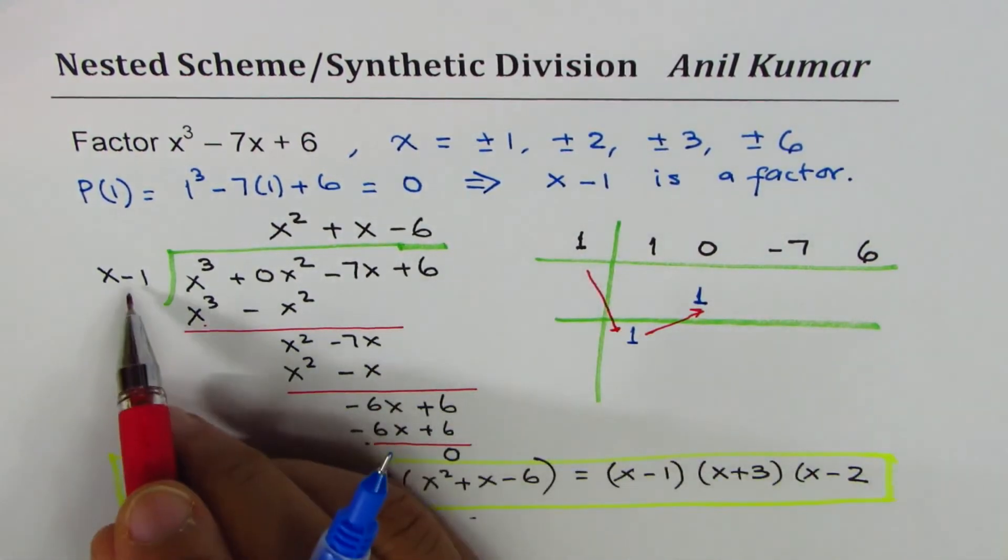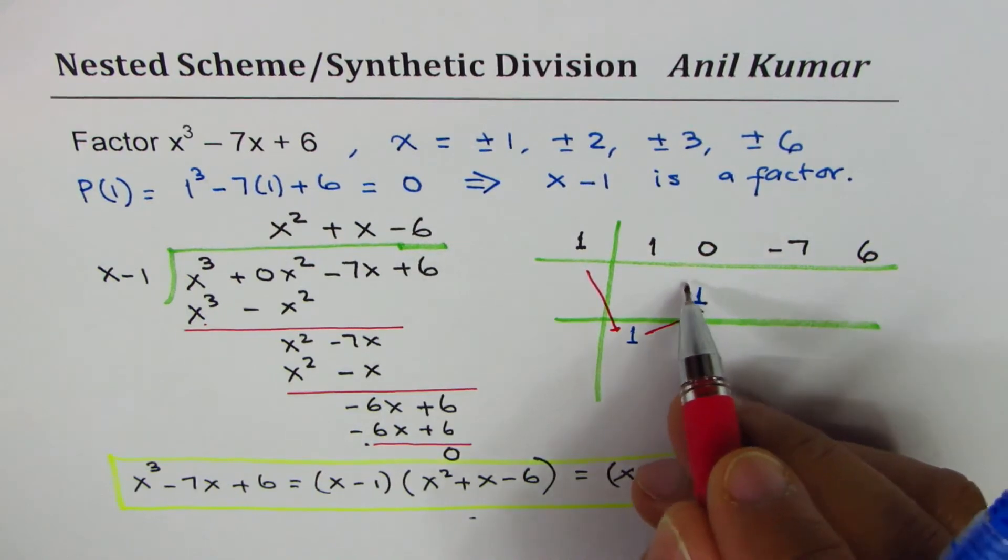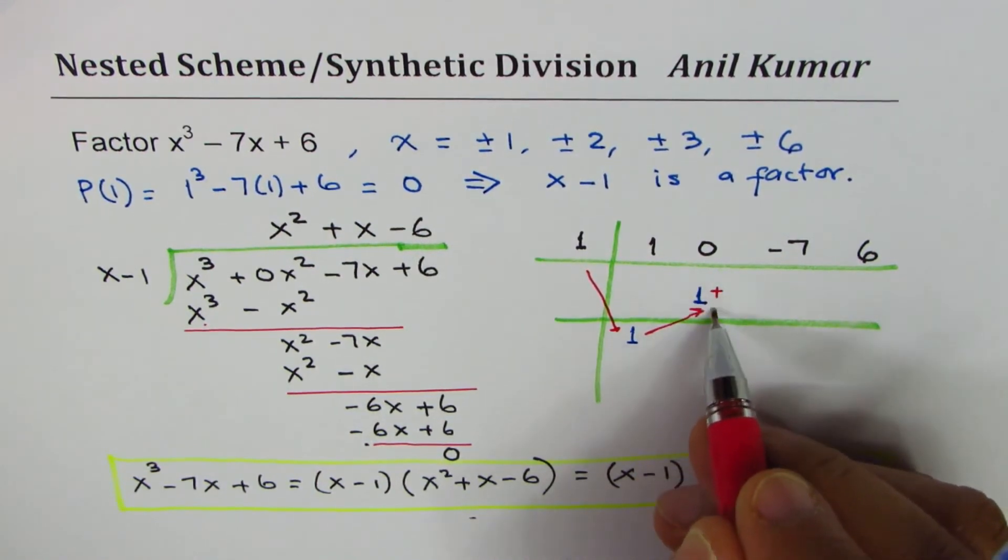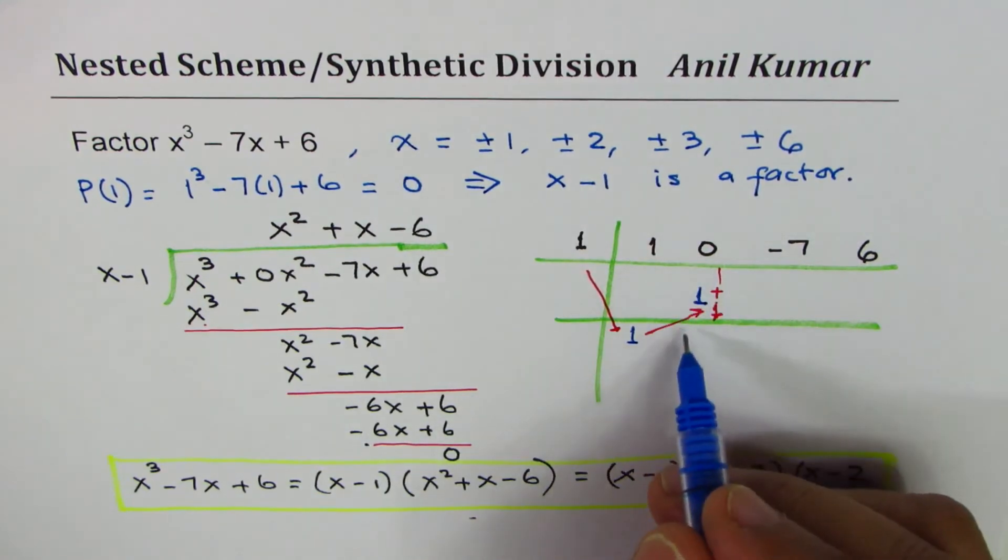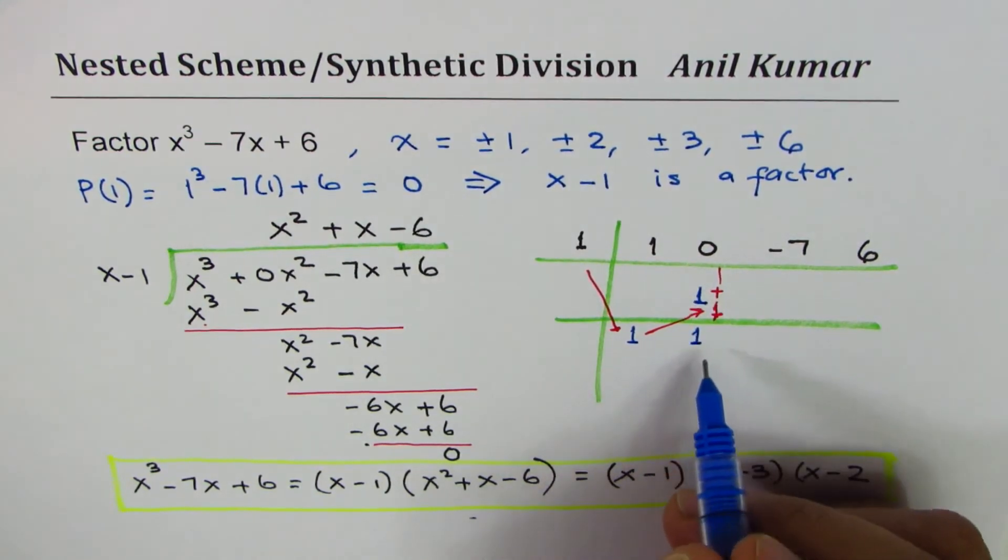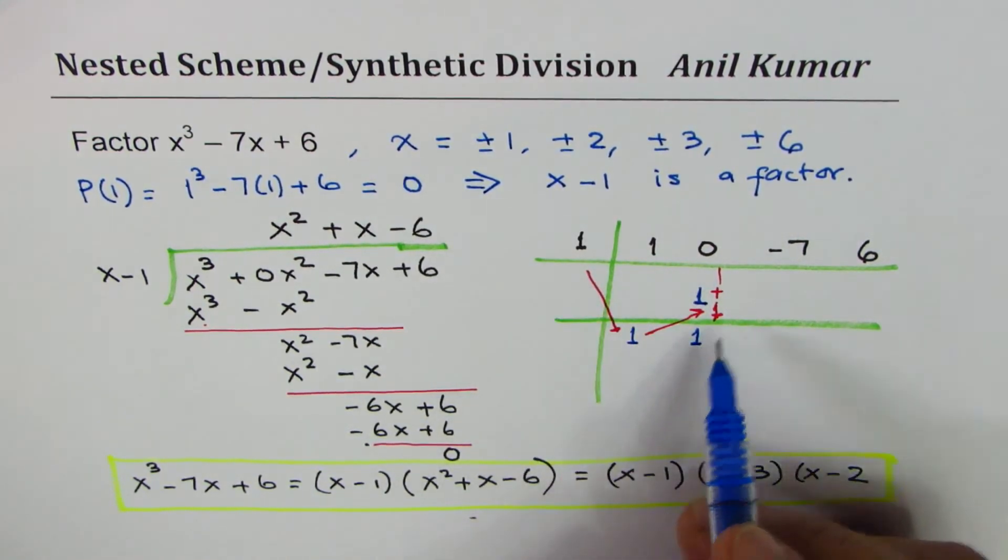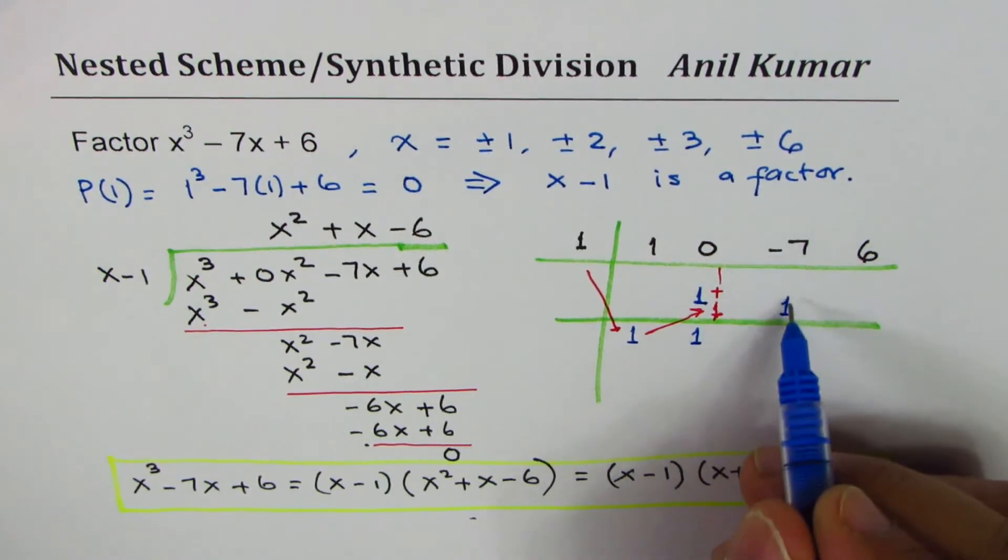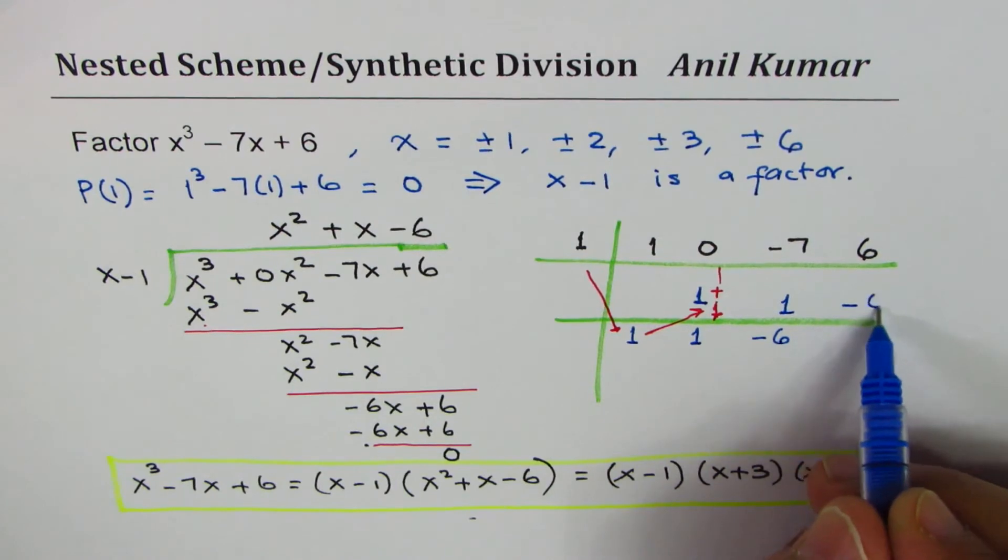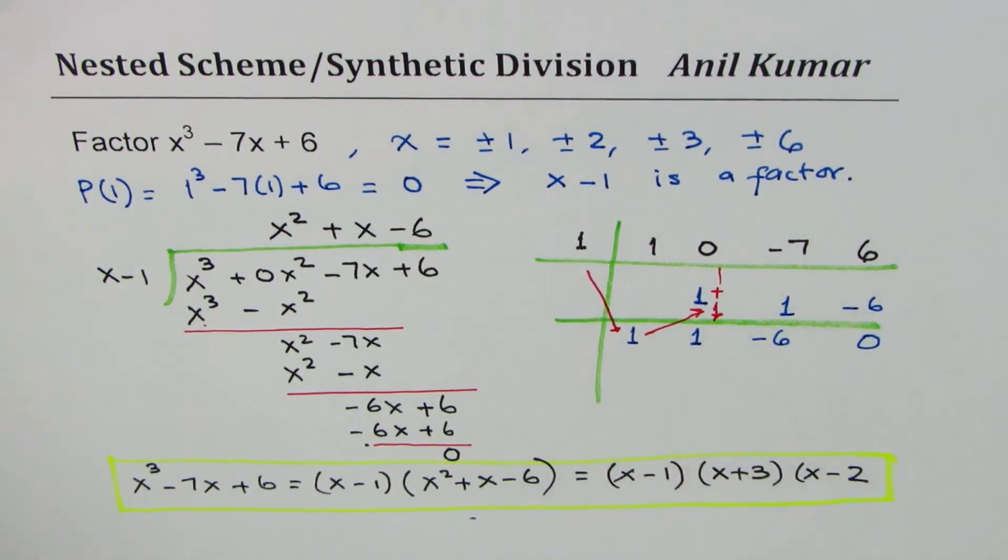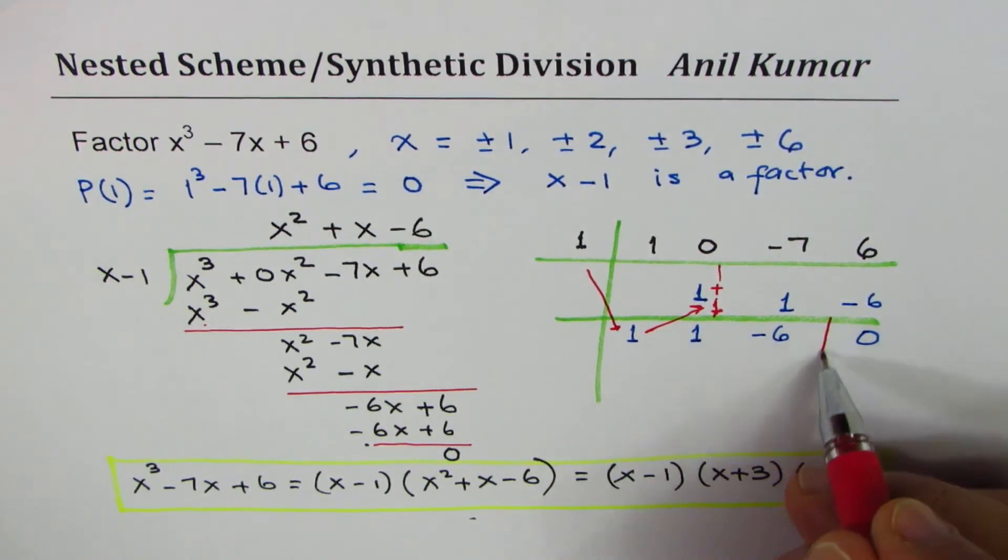So when you multiply 1 by 1 you get 1, and then since we took 1 not minus 1, it makes sense to add them and place the answer below. So we add 0 and 1, we get 1. Then again multiply by 1, so we get plus 1. When you add you get minus 6. When you multiply you get minus 6, and as expected when you add you get 0.